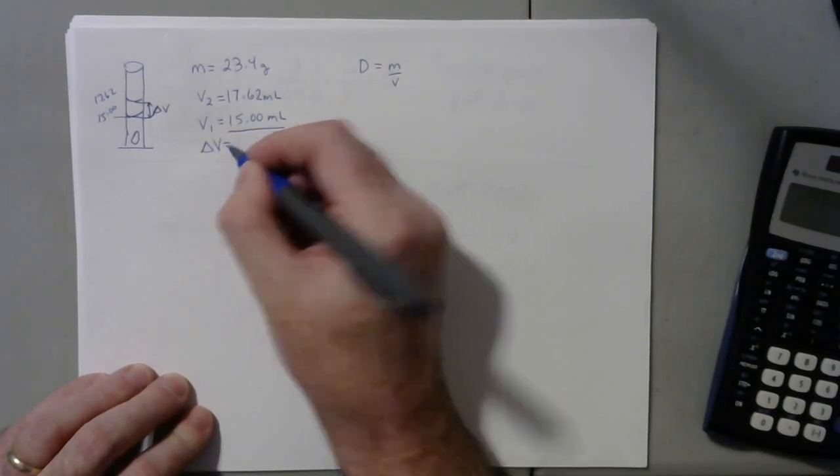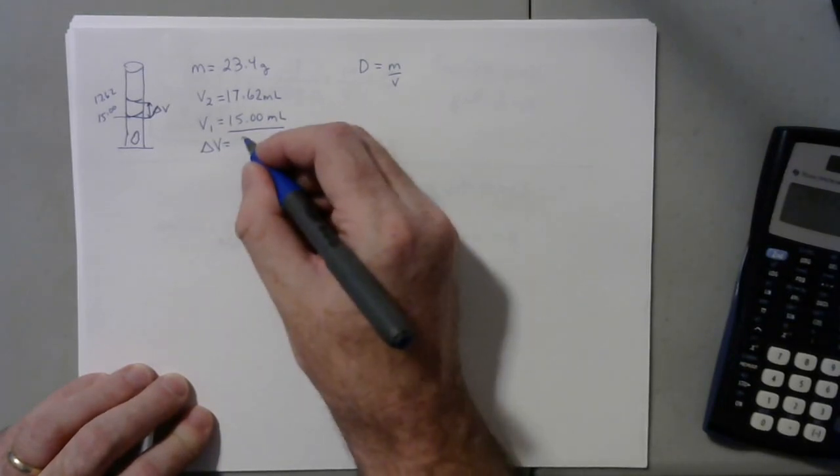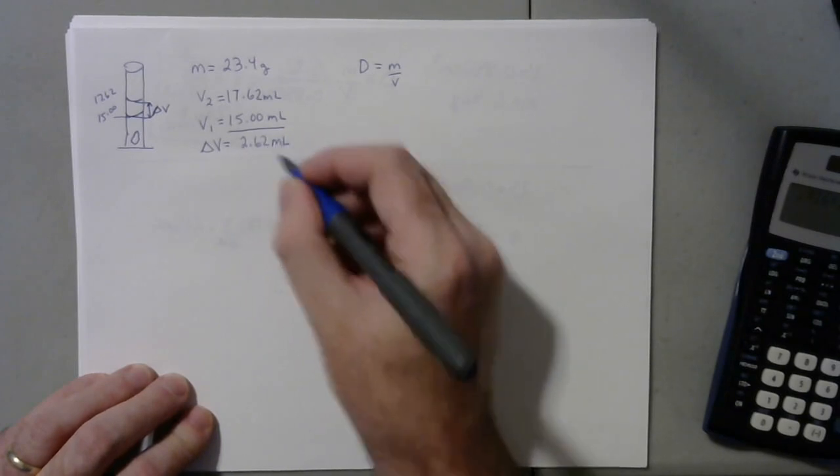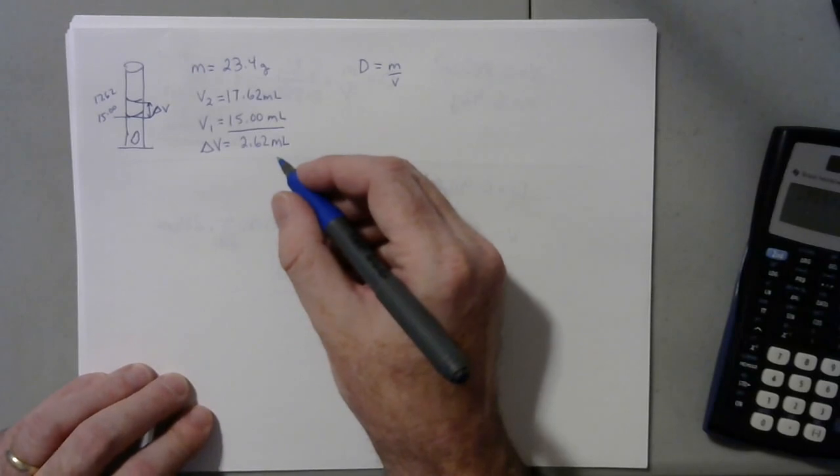So if I take the difference between those two volumes and I get the change in volume, when you see that triangle next to something, that's how much that change is. It's going to be 2.62 milliliters. That is the volume you plug into your density calculation.